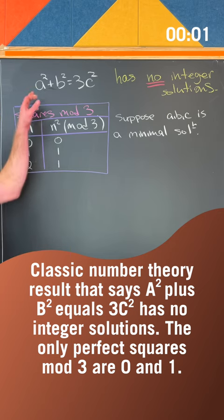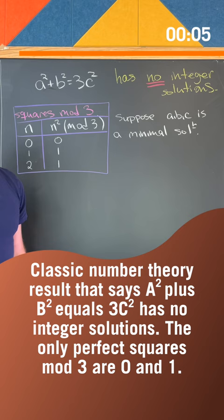Classic number theory result that says a squared plus b squared equals 3c squared has no integer solutions. The only perfect squares mod 3 are 0 and 1.